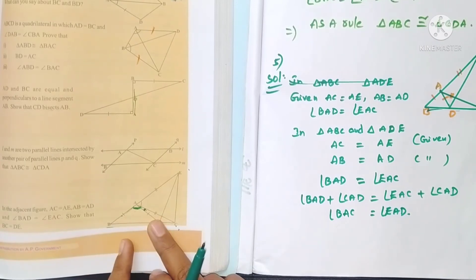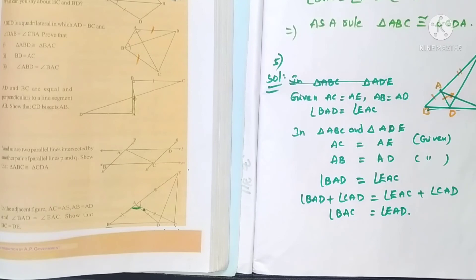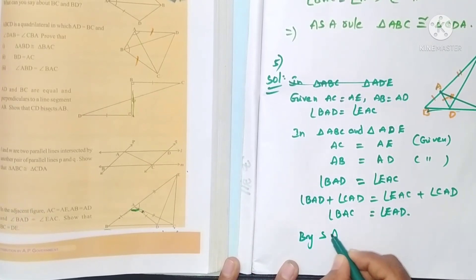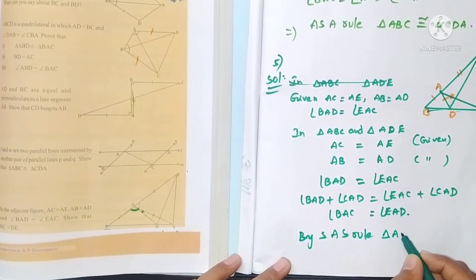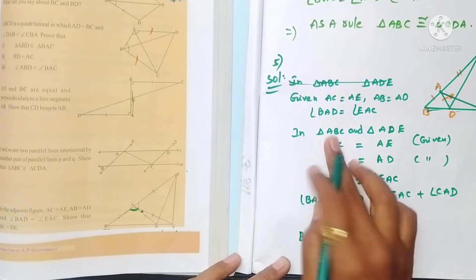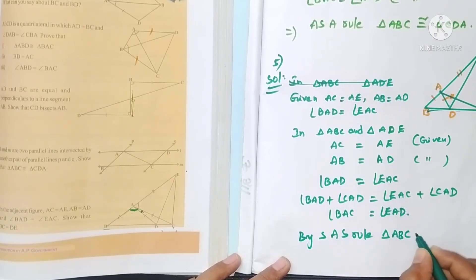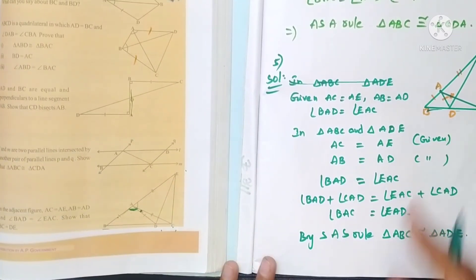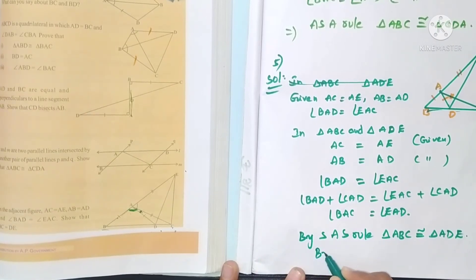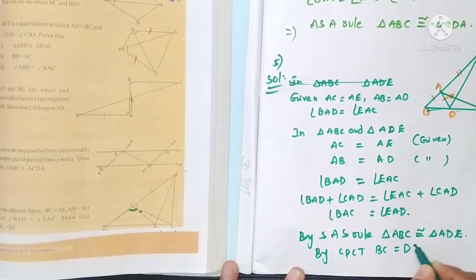Two sides and the included angle are equal. By SAS rule, the two triangles are congruent: triangle ABC is congruent to triangle ADE. They are asking us to show BC is equal to DE. By CPCT — corresponding parts of congruent triangles — BC is equal to DE.